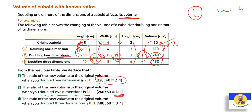Summary: if you double one dimension, multiply the volume by 2. If you double two dimensions, multiply the volume by 4. If you double all three dimensions, multiply the volume by 8. So the ratios are: double one dimension → 2 to 1; double two dimensions → 4 to 1; double three dimensions → 8 to 1.